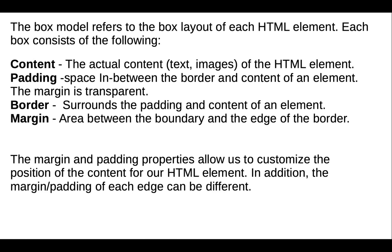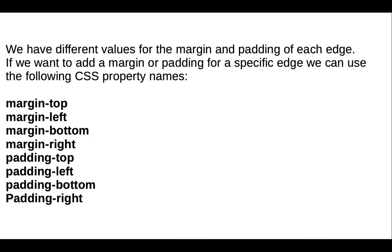Margin is known as margin. The margin and padding properties allow us to customize the position of the content for our HTML element. In addition, the margin and padding of each edge can be different, so we have different values for each edge. If you want to add margin for a specific edge, we can use properties like margin-top, margin-left, margin-bottom, and margin-right. Similarly for padding, we use padding-top, padding-left, padding-bottom, and padding-right.